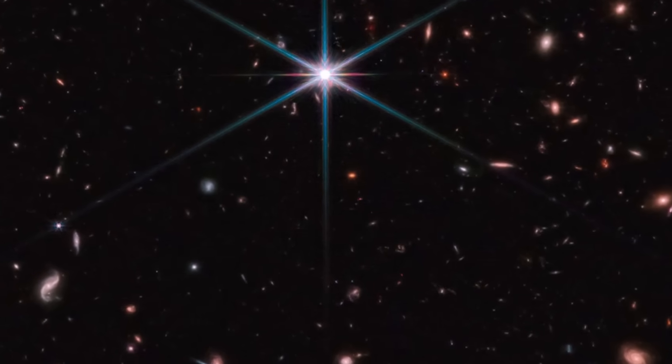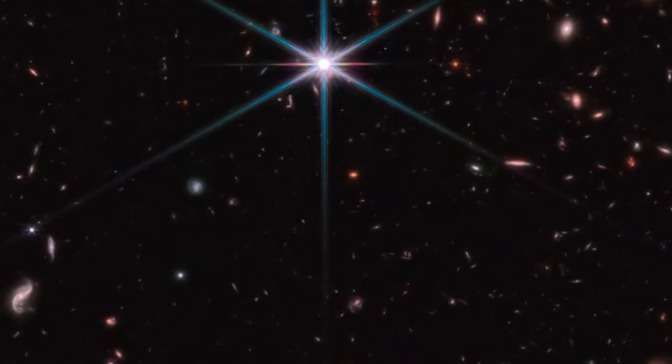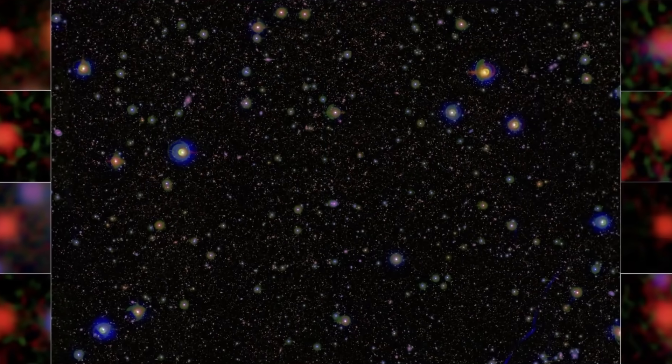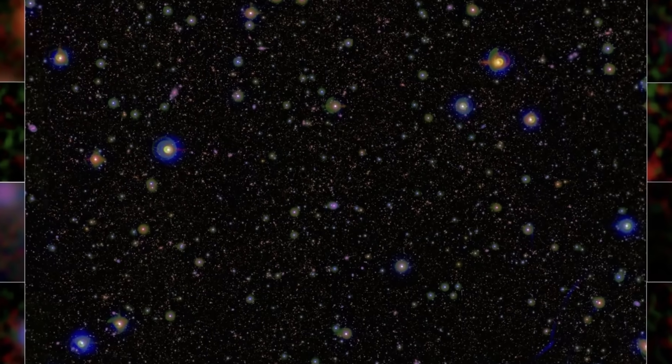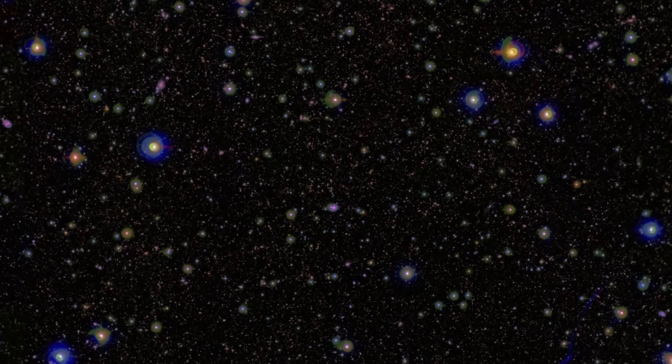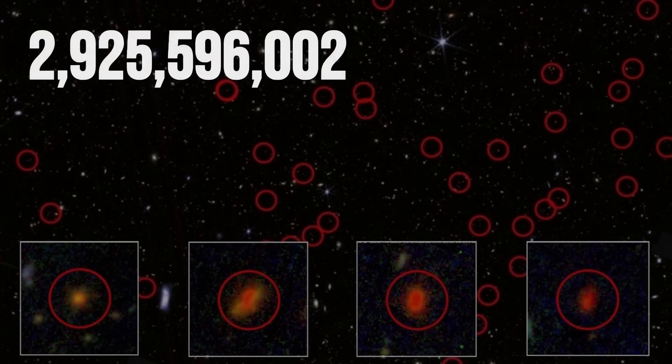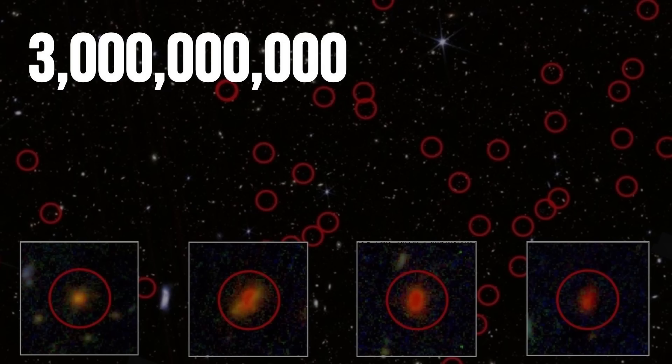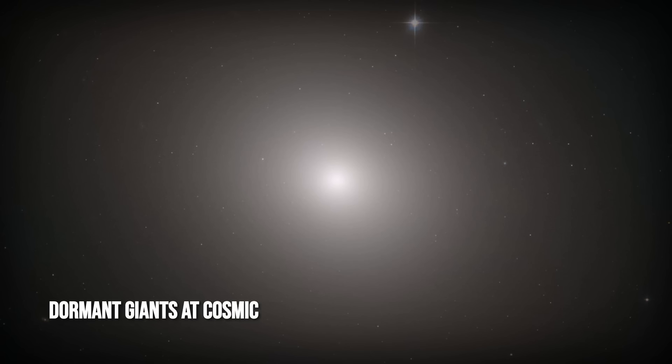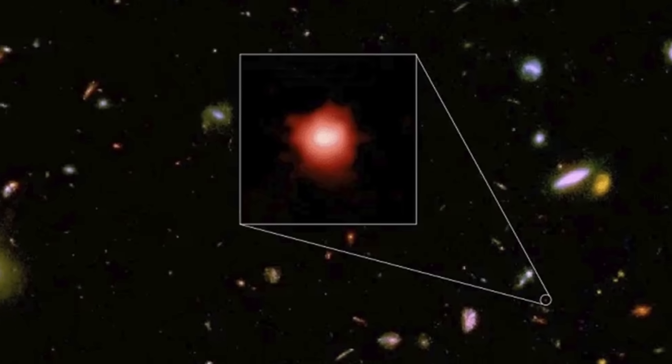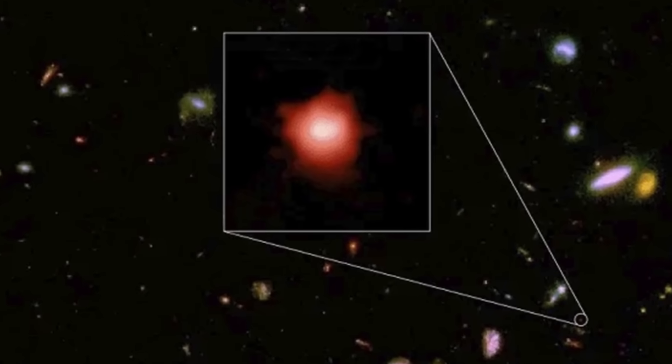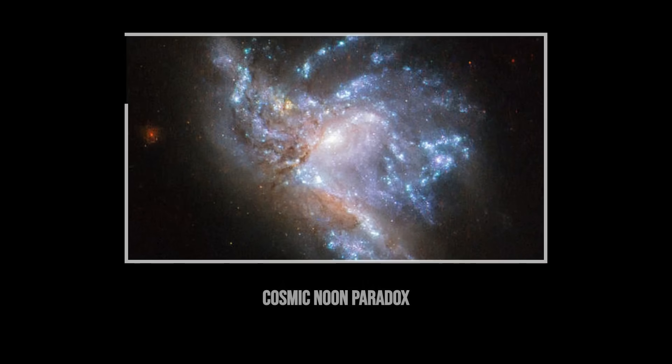Webb's infrared vision is now revealing a startling contradiction. Galaxies that have already stopped forming stars, so-called quenched systems, appear in abundance at a time when they should be ablaze with stellar birth. These dormant giants, some with masses rivaling today's largest ellipticals, sit quietly amid a cosmic landscape that theory predicted would be dominated by youthful, chaotic systems.